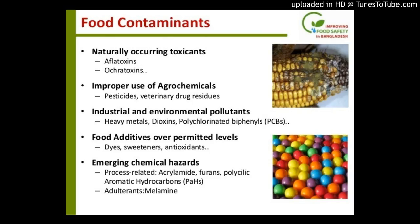They include: 1) using PBK modeling and duplicate diet studies to establish, preferably in humans, correlations between external exposure and biomarkers; 2) elucidation of the possible endogenous formation of the process-related contaminants and the resulting biomarker levels; 3) the influence of inter-individual variations and how to include that in the biomarker-based exposure predictions.